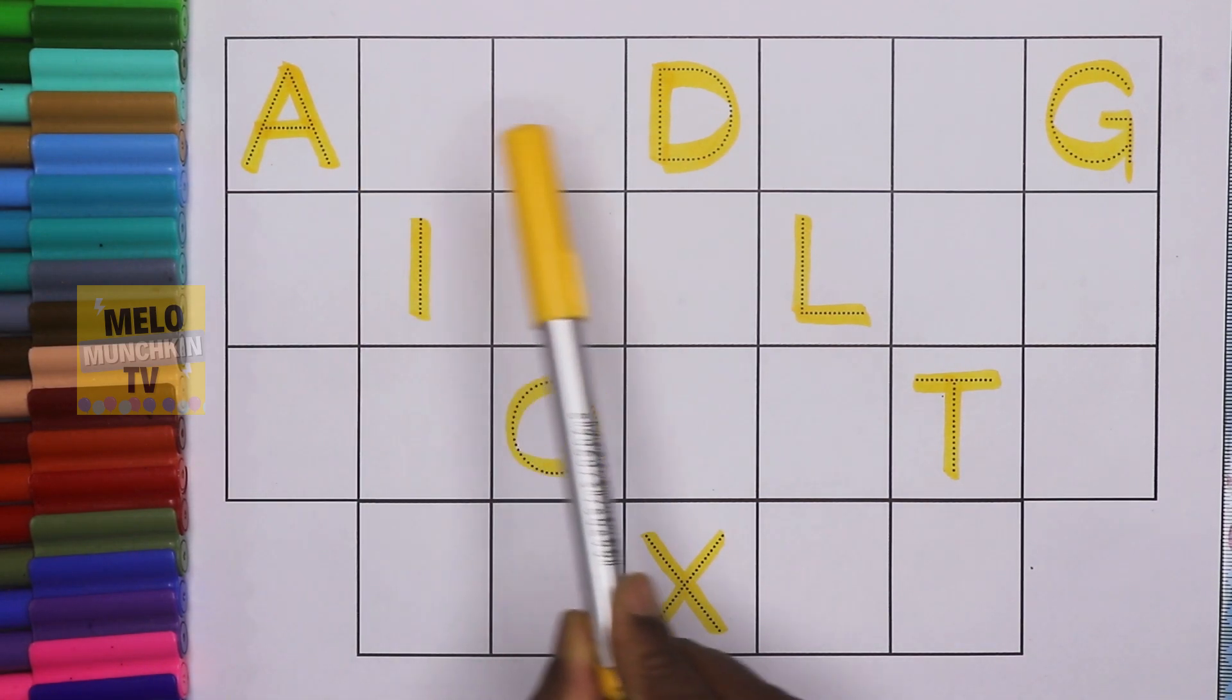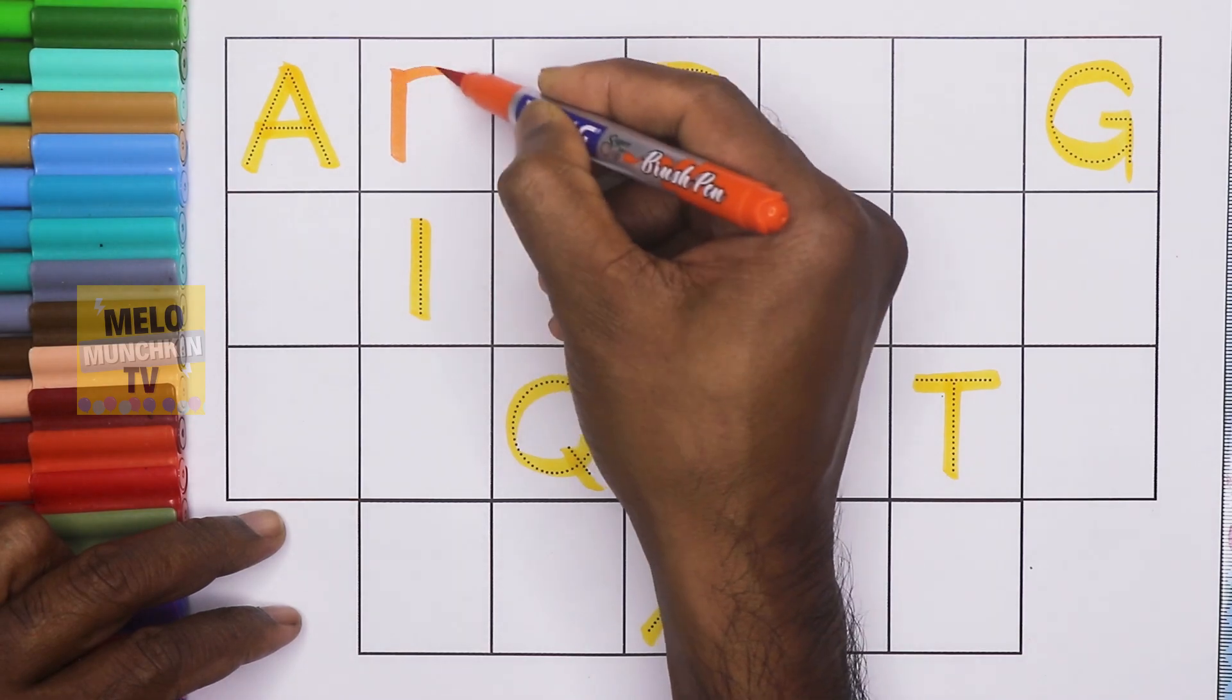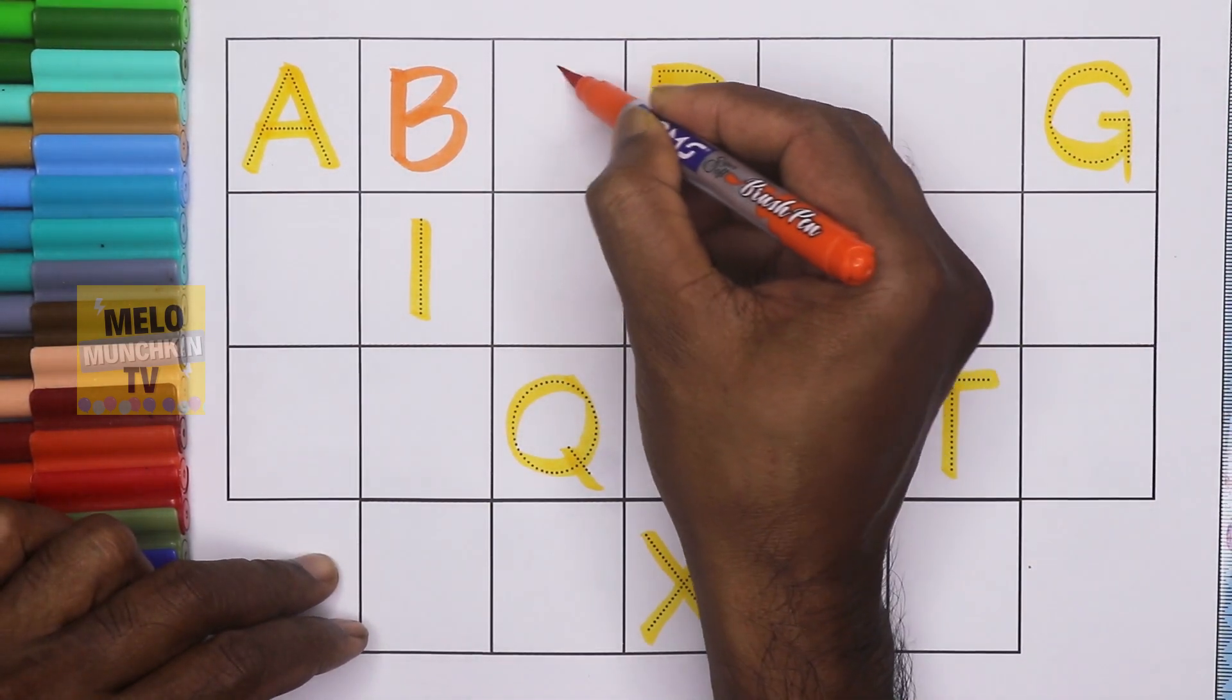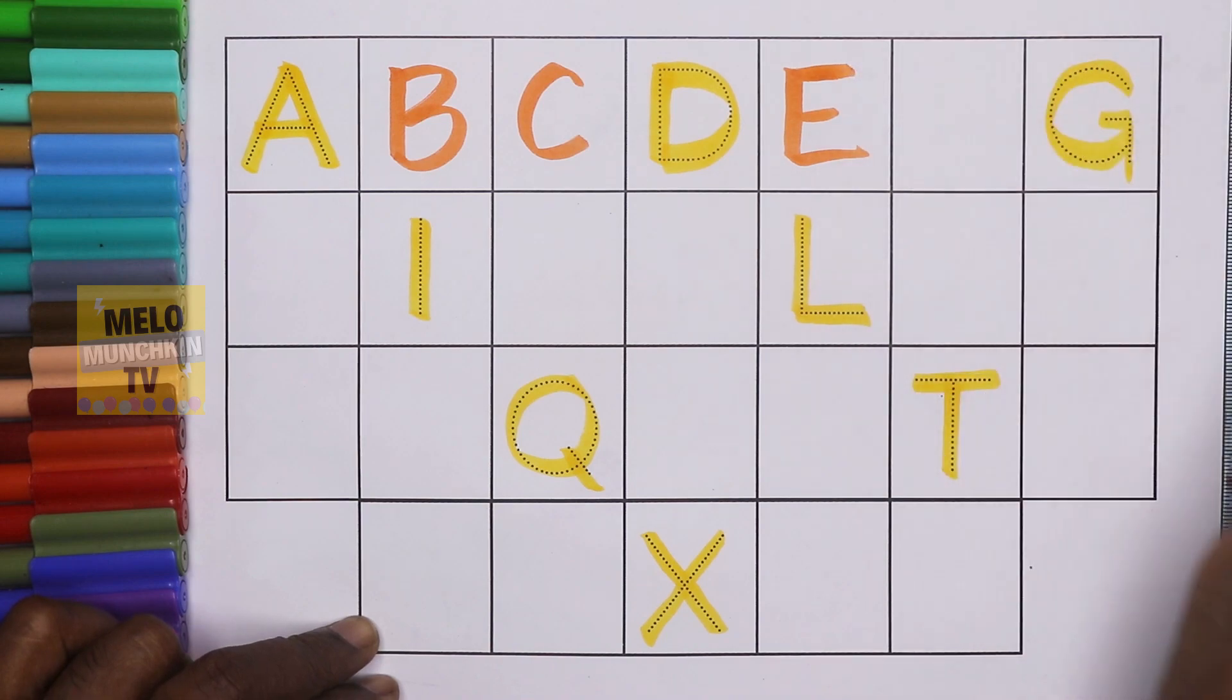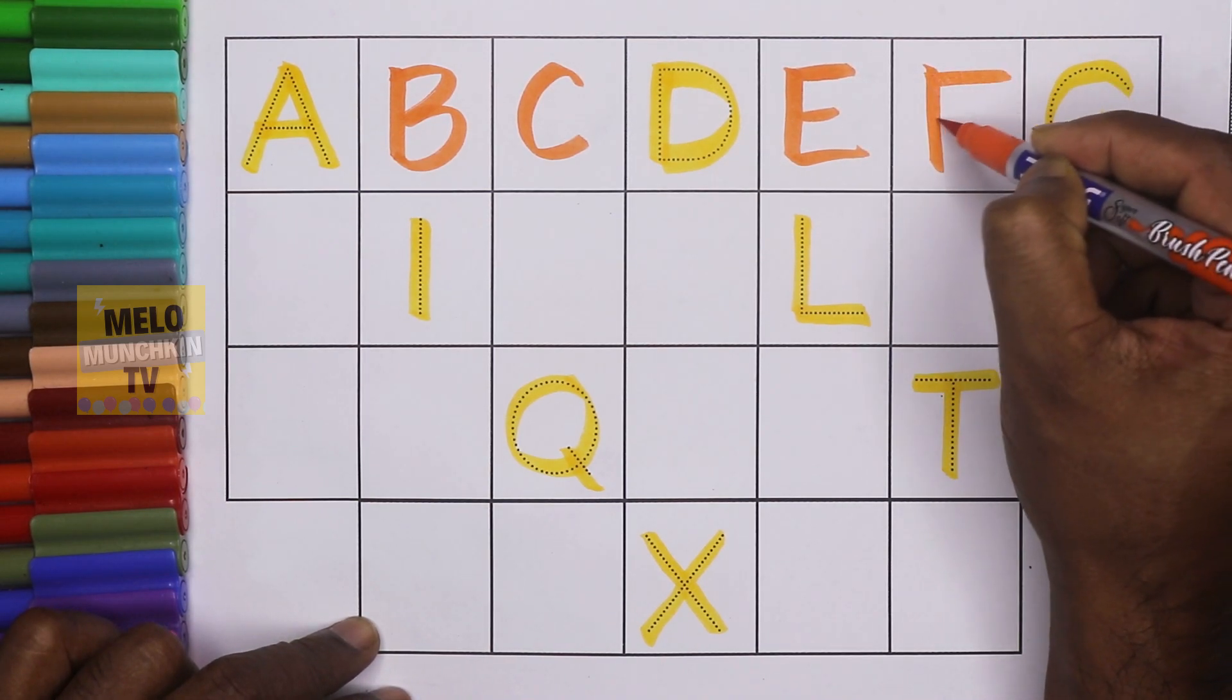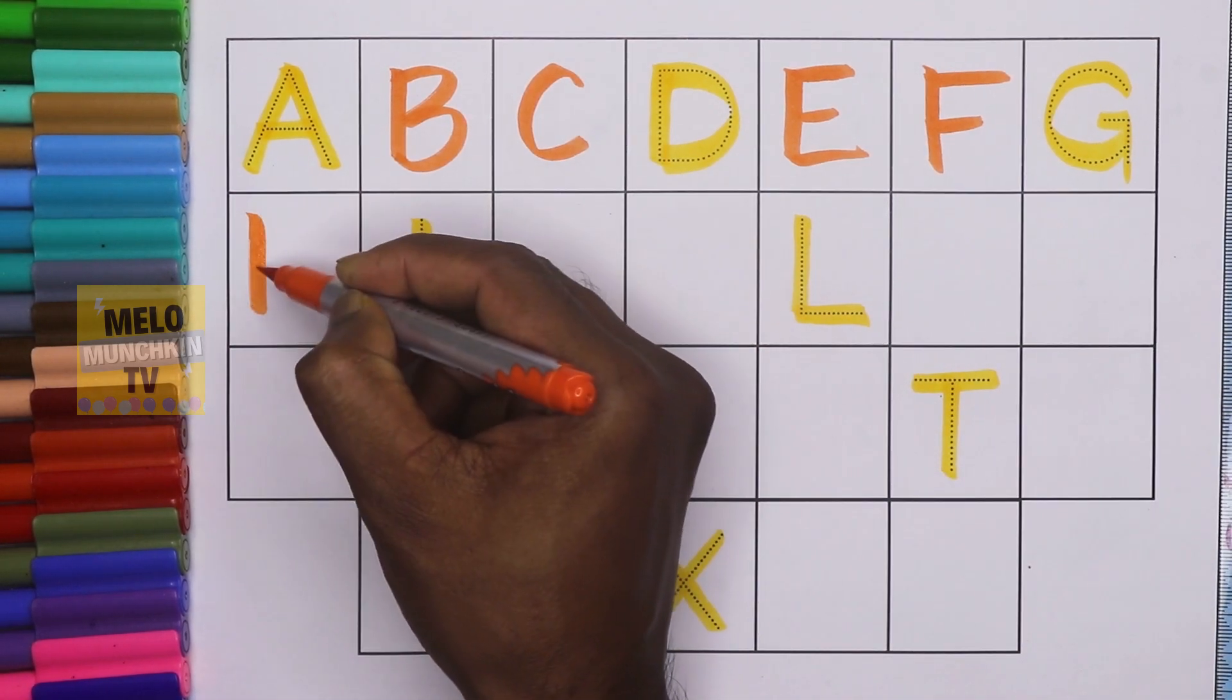Now let's find out the missing letters. First I'll take orange color. After A it is B for baby, after B it is C for cat. After D it is E for elephant. After E and before G it is F for fan.